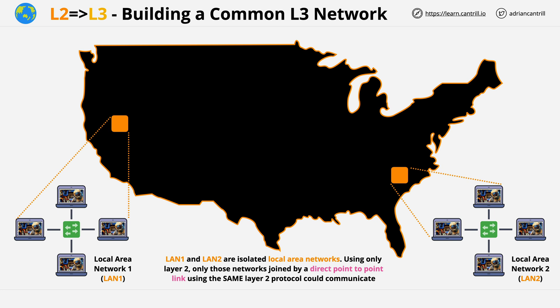Now LAN 1 and LAN 2 are isolated layer 2 networks at this point. Devices on each local network can communicate with each other, but not outside of that local layer 2 network.